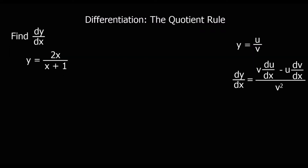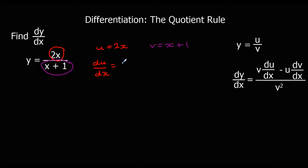Let's look at an example of the quotient rule. Here we've got one function divided by another function, so we can use the quotient rule. We're going to say u is 2x and v is x plus 1. If we differentiate both of them, we've got du/dx is 2 and dv/dx is 1. So then we just substitute these in to the quotient rule and find dy/dx.